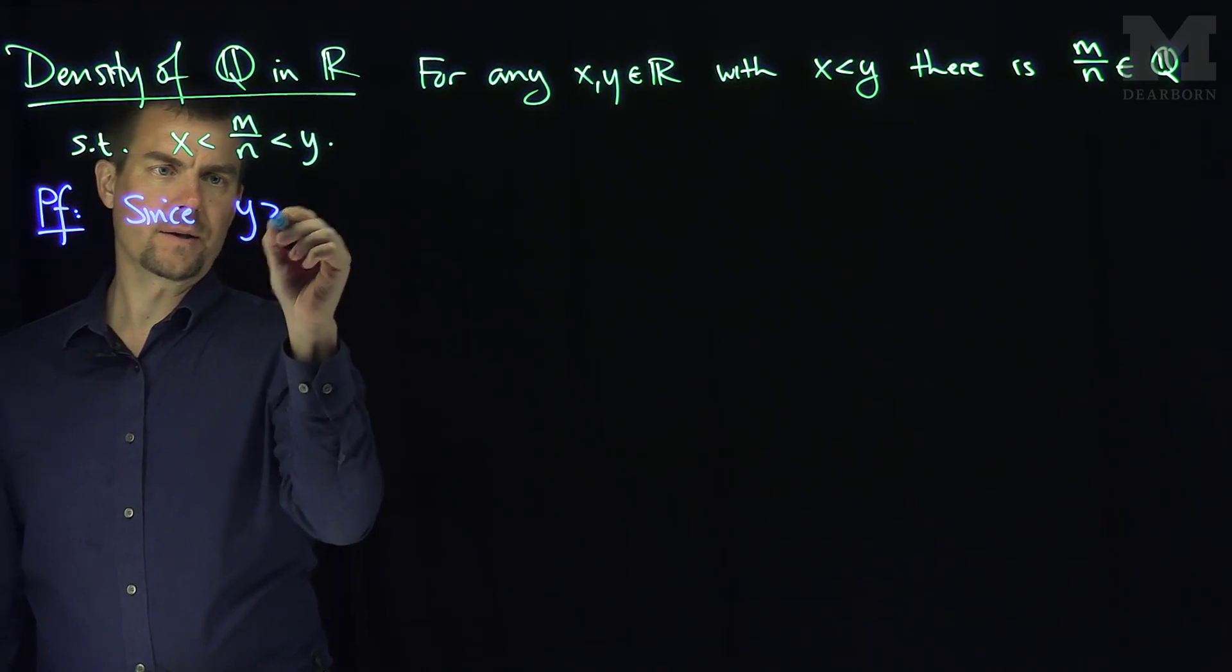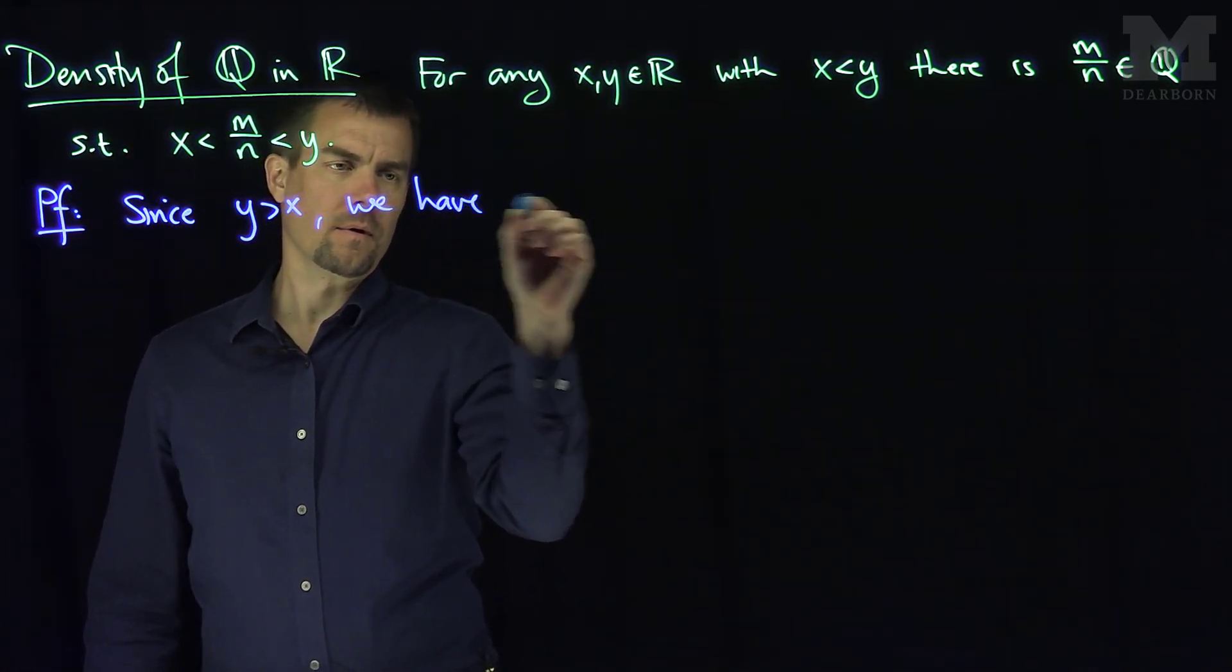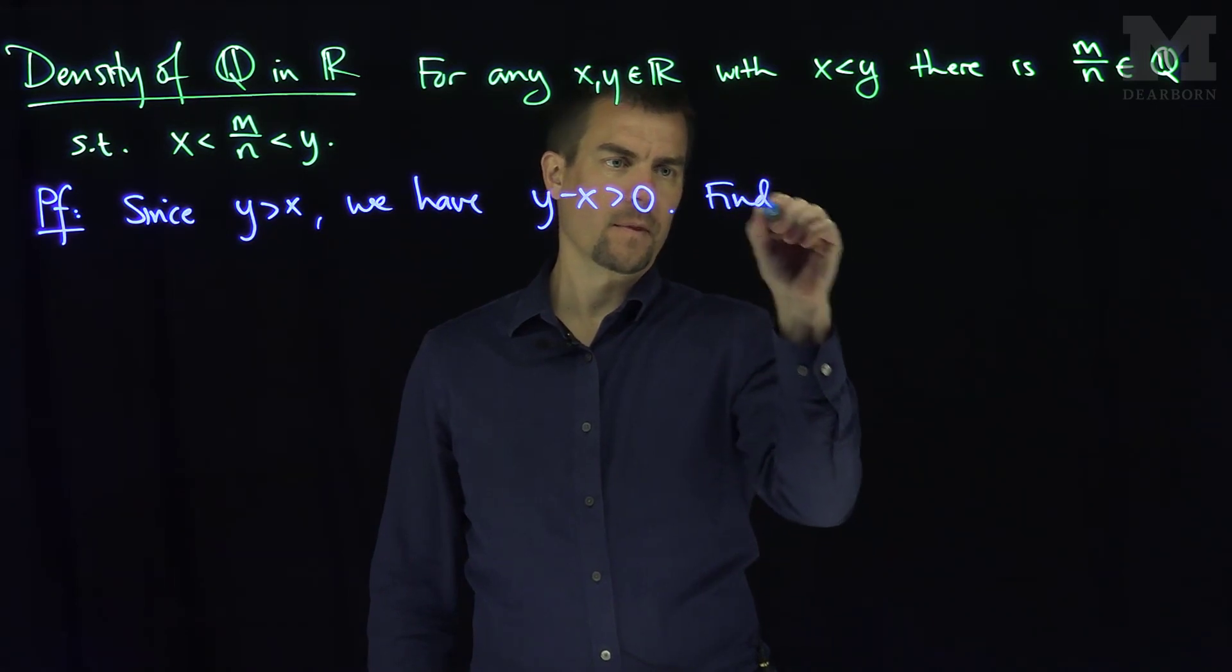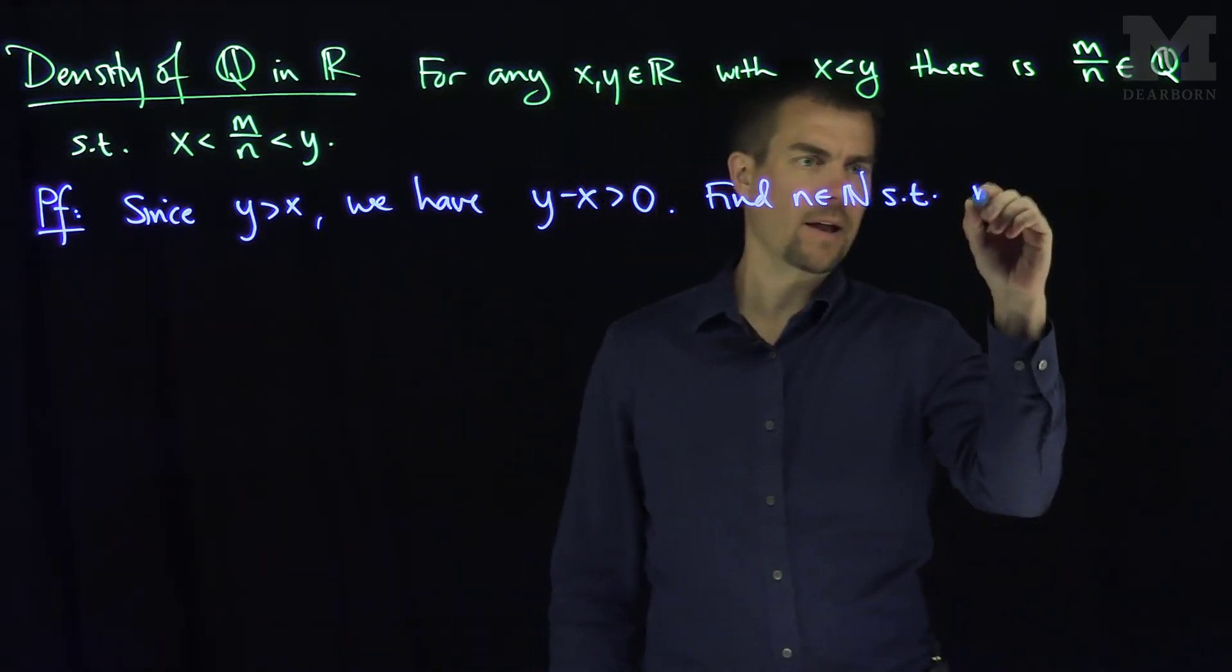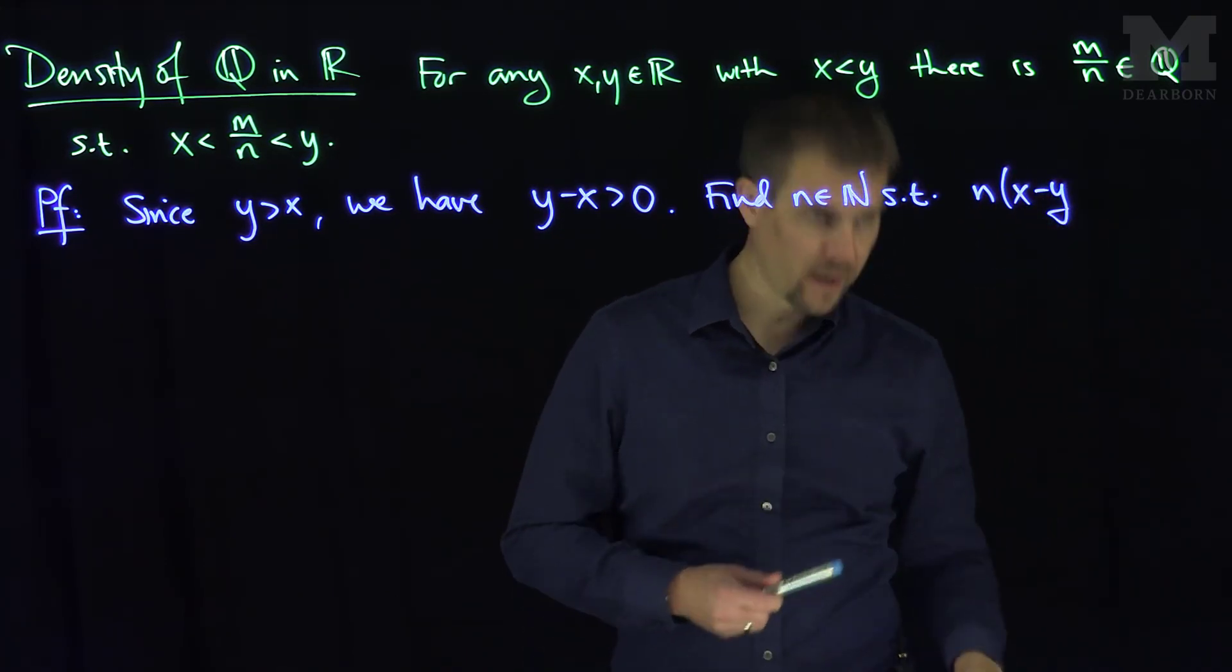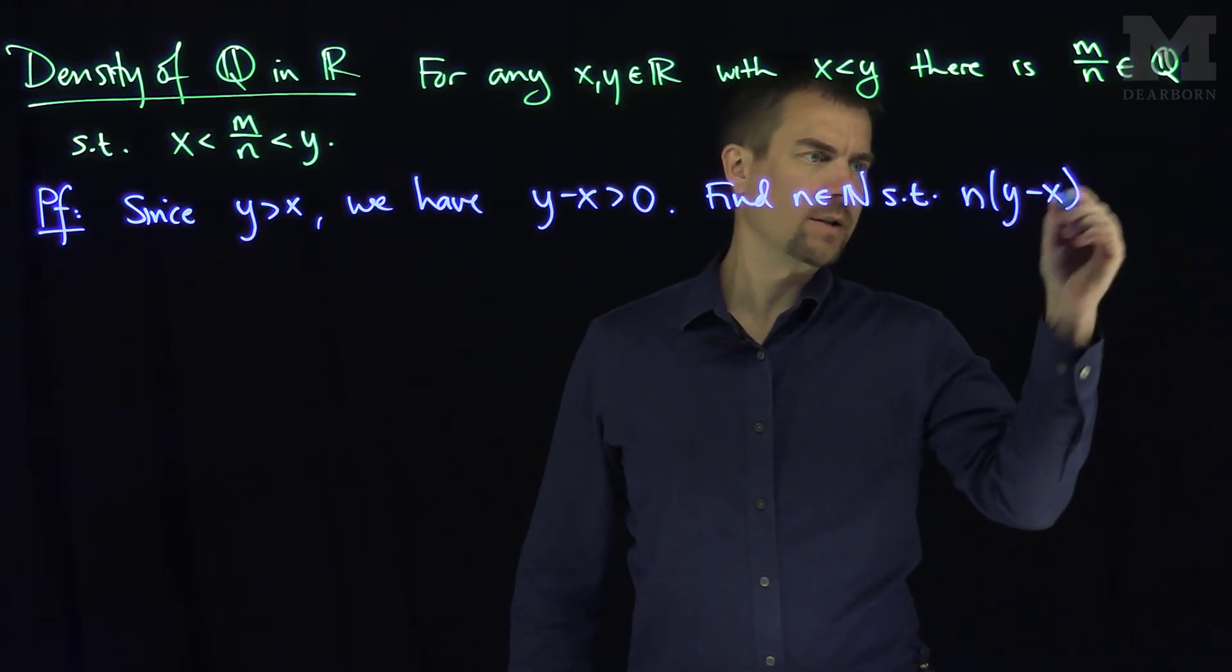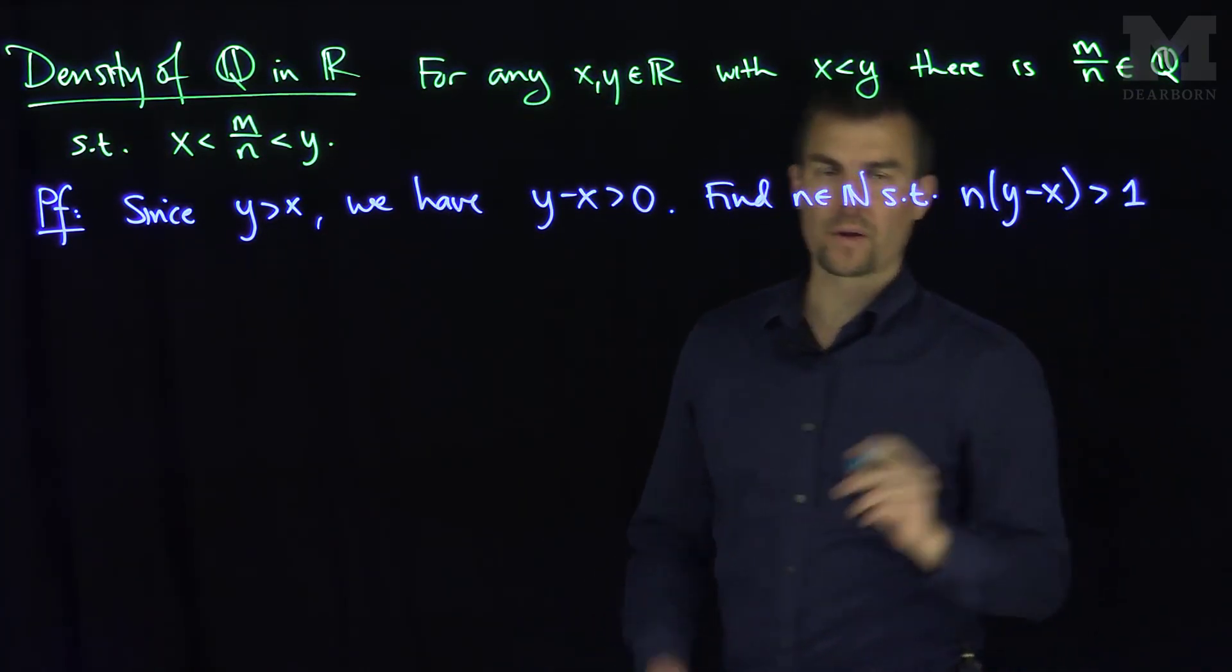Since y is bigger than x, we have that y minus x is greater than zero. And by Archimedean property, we can find n in N such that n times y minus x, that's the positive quantity, is larger than one. That's just Archimedean applied to y minus x and one.